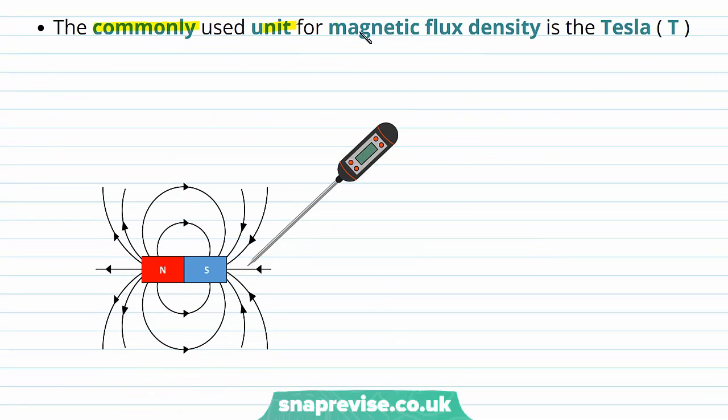The commonly used unit for magnetic flux density is the Tesla, or T. And if we measured the magnetic flux density at the pole of a bar magnet, we'd find that it was about 0.01 Tesla. And this is because the magnetic flux density of a bar magnet is very small.